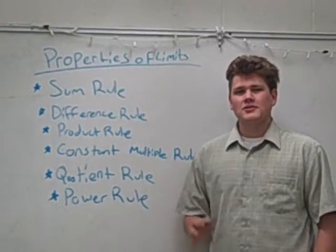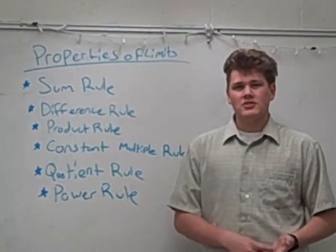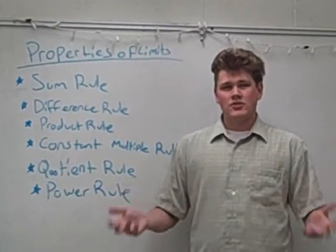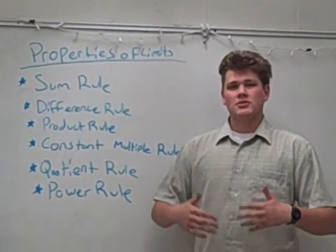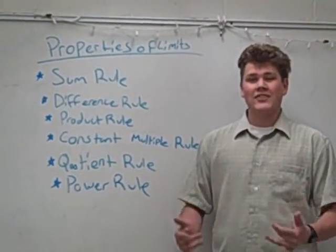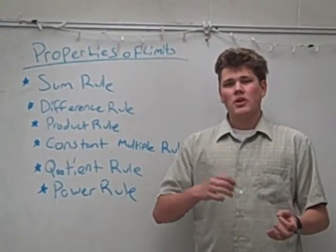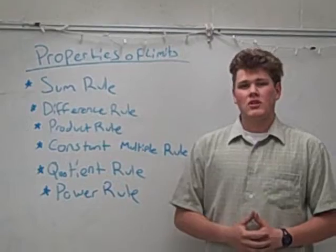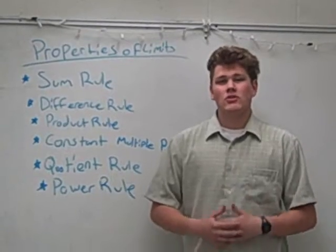Now in addition to just finding limits, there's various things we can do with them. If we have two functions together and we want to find the limit of these two functions combined, there's six different rules. The sum rule allows us to add the two functions' limits together. The difference rule works with subtraction. The product rule allows us to multiply the two functions' limits together, while the quotient rule allows us to divide the two limits. The constant multiple rule says if there's a constant being multiplied to the function, we can multiply it to the limit of that function. And the power rule: if a function is being raised to a power, we can take that limit and raise it to the same power.